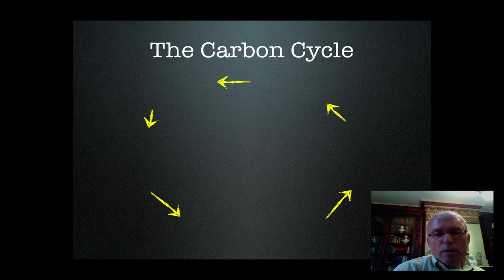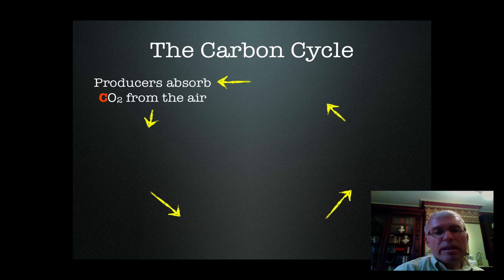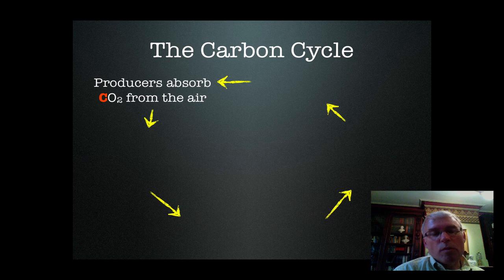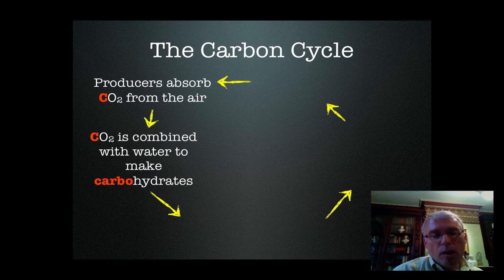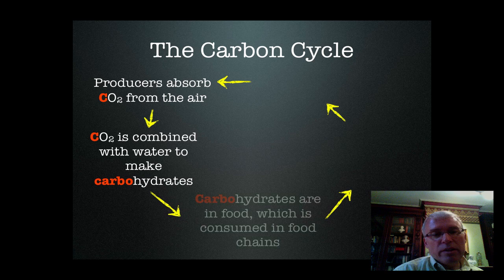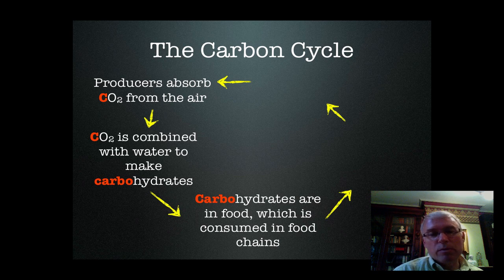We're going to talk about the carbon cycle, which is the movement of carbon through ecosystems. We'll start with the carbon dioxide in the air or in the atmosphere. This CO2 — notice the red C, which stands for carbon — is absorbed in the form of carbon dioxide by producers. During the process called photosynthesis, this carbon dioxide is combined with water to produce carbohydrates. Carbohydrates are probably the simplest form of food molecules; a carbohydrate you've probably heard of are sugars, like glucose. These carbohydrates are in food, which is then consumed in food chains and food webs.